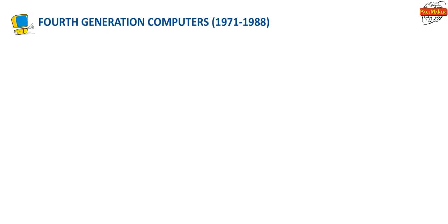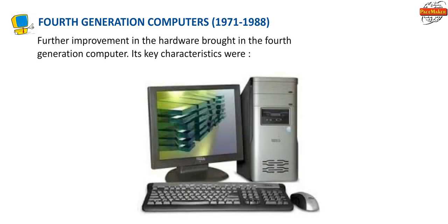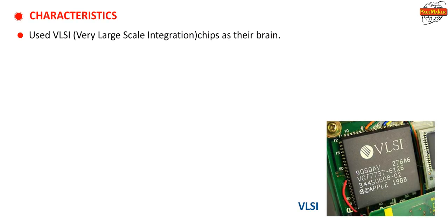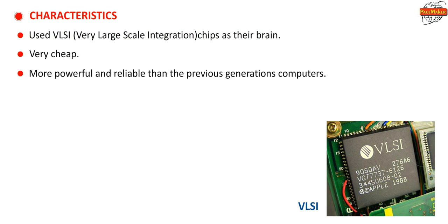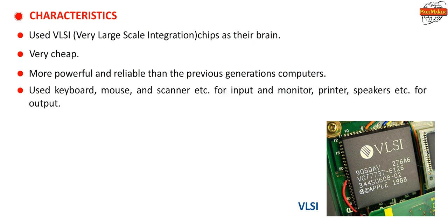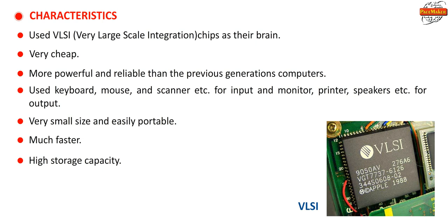Fourth Generation Computers (1971–1988): Further improvement in hardware brought in fourth generation computers. Key characteristics: they used VLSI (Very Large Scale Integration) chips as their brain, were very cheap, more powerful and reliable than previous generations. Input devices included keyboard, mouse and scanner; output devices included monitor, printer and speakers. They were very small in size, easily portable, much faster, and had high storage capacity. Examples: IBM PC, Apple Macintosh, HP 9000, etc.